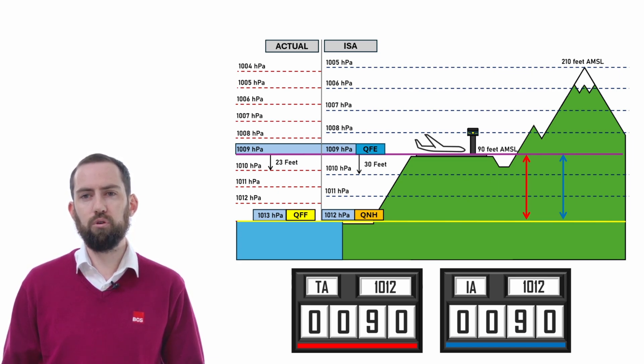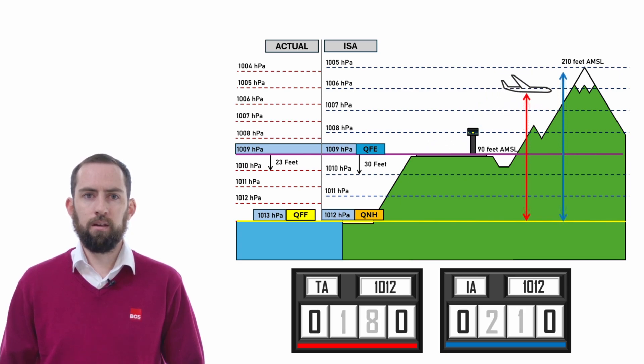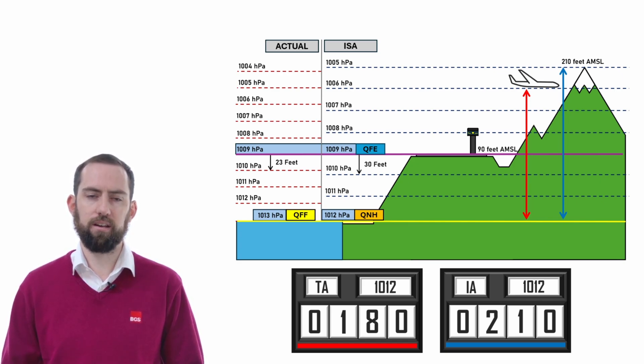The moment we move away from the QFE, whether that be up or down, we will start to see the effect of temperature errors. Imagine that this aircraft takes off and climbs up to a point in the atmosphere where the atmospheric pressure is 1005 hectopascals.